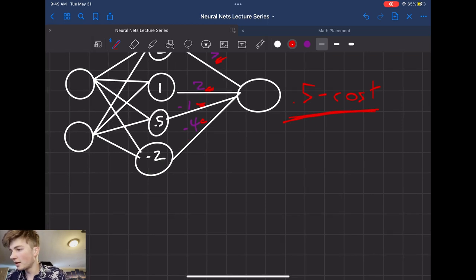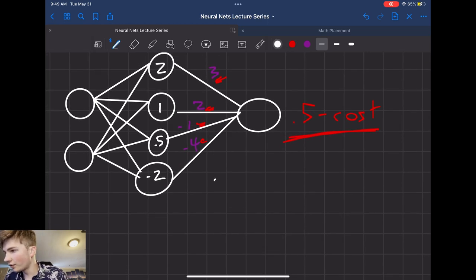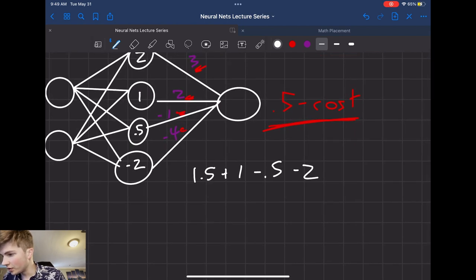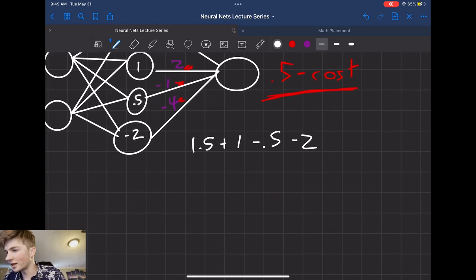So we can do that. We'll get 1.5 plus 1 minus 0.5 minus 2. And then adding all that up, we should get 0. I'm just doing these randomly, but yeah, we're going to get 0.